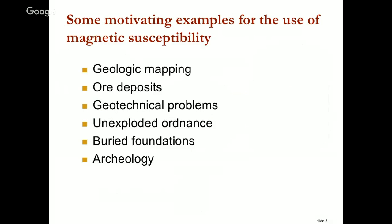Just a couple of uses for magnetic susceptibility as our particular physical property — there's a whole host of them: geologic mapping, looking for ore deposits, geotechnical problems, unexploded ordnances, building foundations, and archaeological work. Of all the types of surveys in geophysics, I would guess that magnetics is the most routinely used, because it has applications in all these different areas. Whether you're an archaeologist or a mineral explorationist, you use exactly the same equipment and the same type of physics.